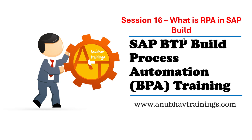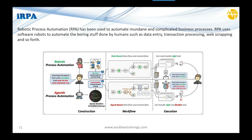Robotic Process Automation (RPA) has been used to automate mundane and complicated business processes. RPA uses software robots to automate the boring stuff done by humans, such as data entry, transaction processing, web scraping, and so forth. For example, getting all tweets about the US 2024 presidential elections — as a human you go to Twitter, enter a hashtag, get all the tweets, and manually copy them. That's a boring task.